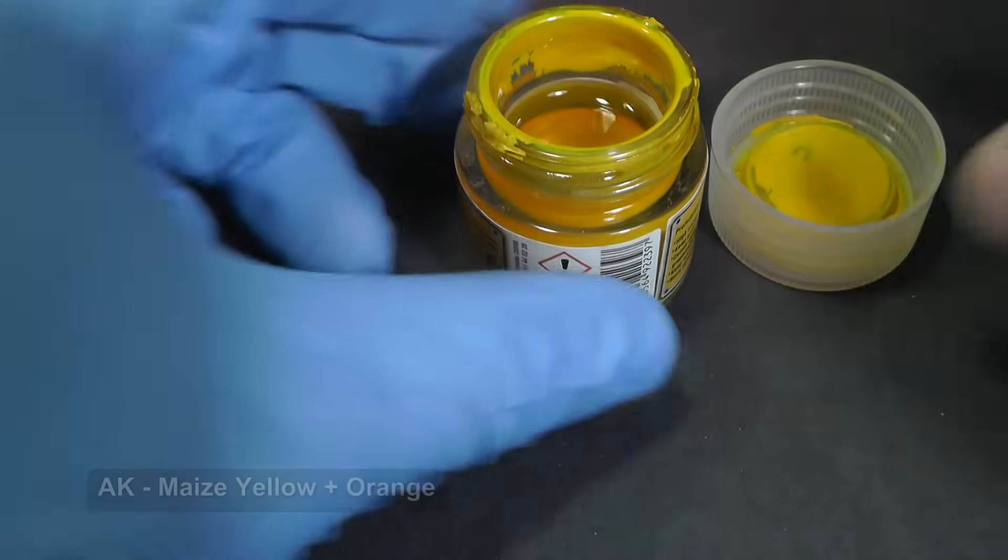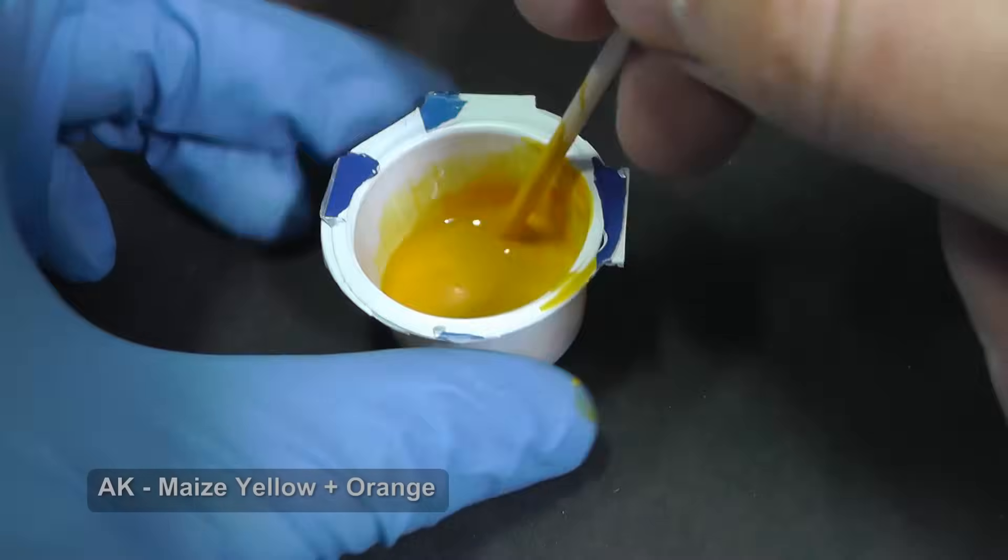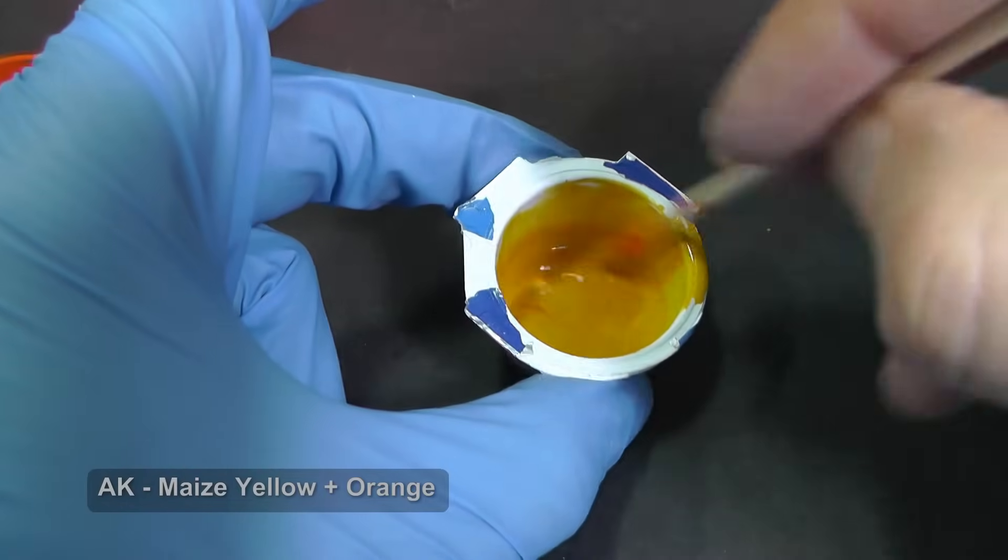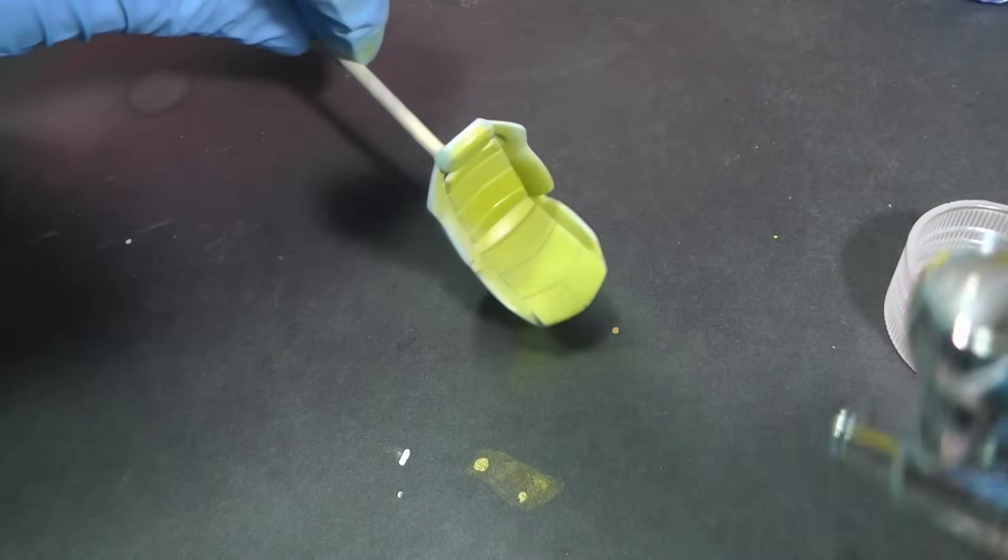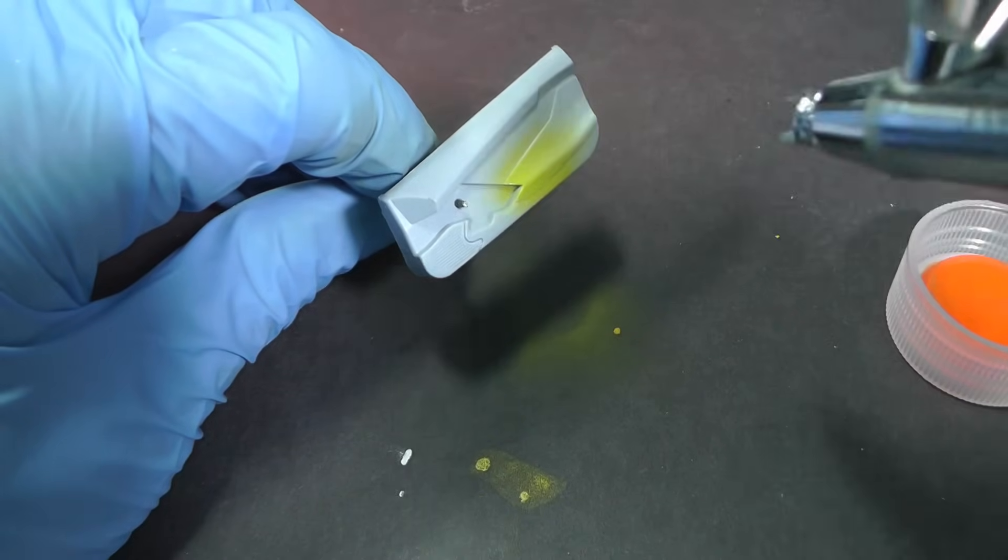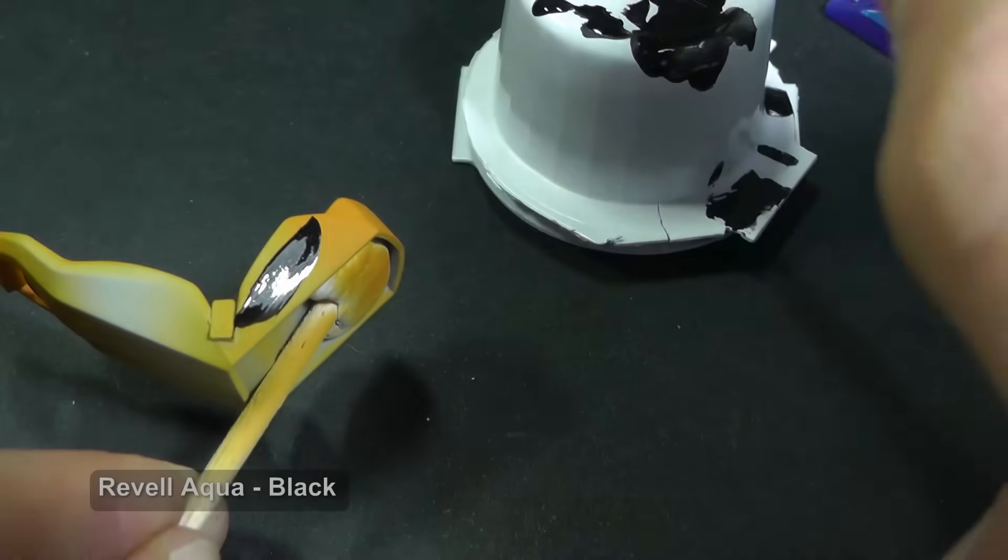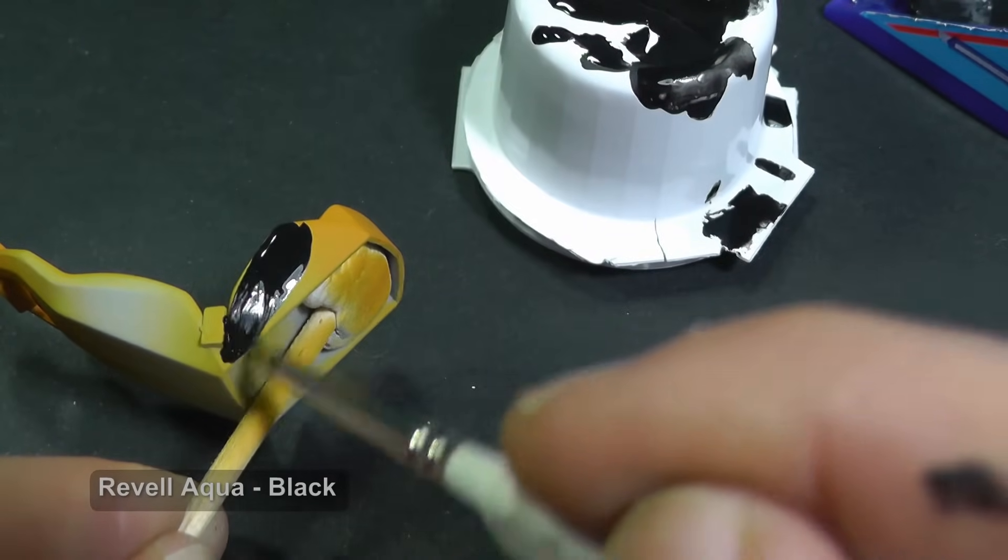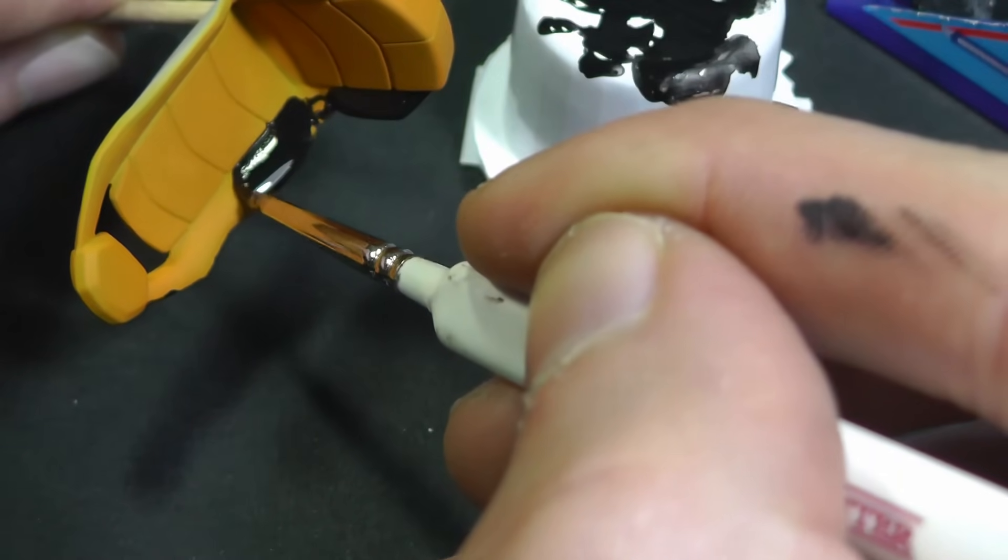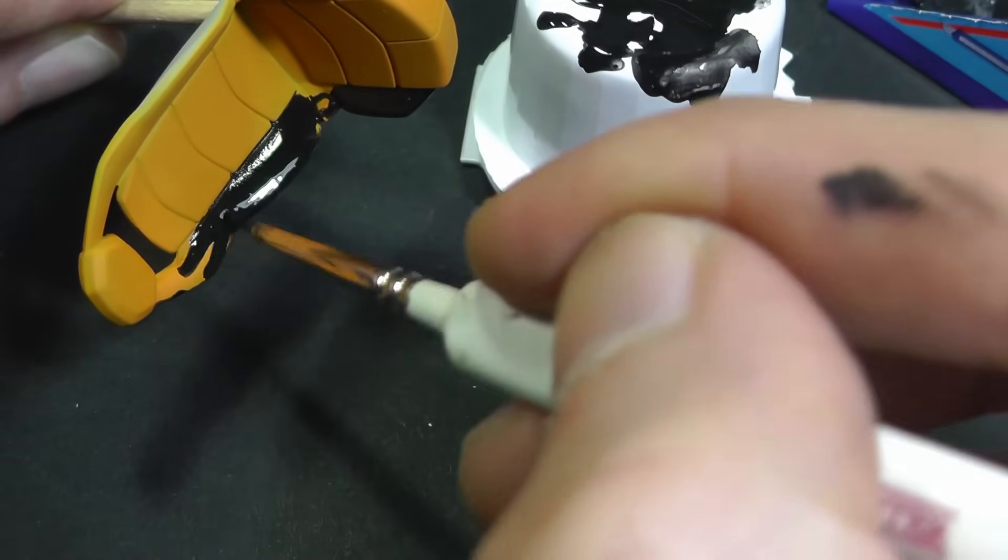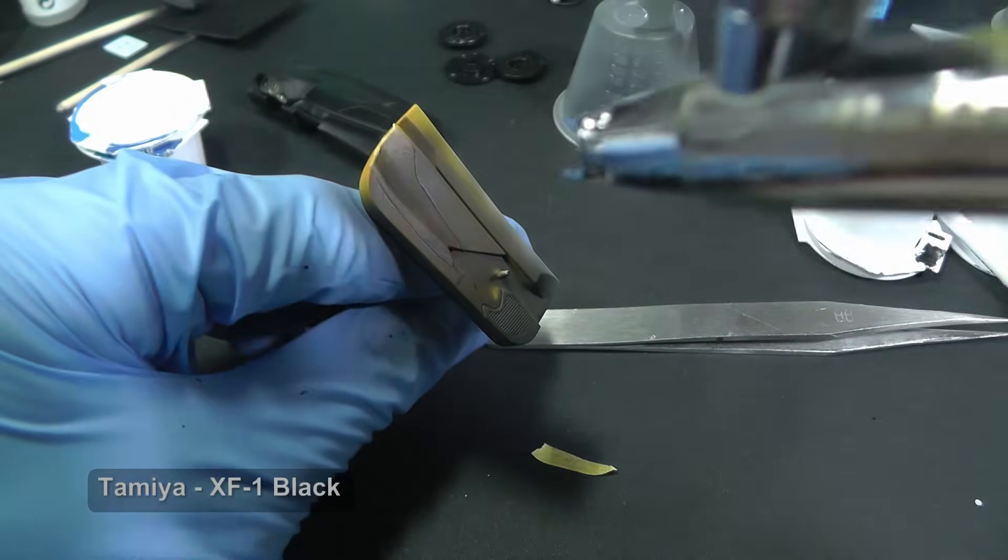Now I mix a similar orange shade with acrylic colors. The color has dense consistency, therefore I add a few drops of thinner. Now I paint black parts with a paint brush and acrylic color. Or you can mask orange parts with masking tape and spray black color with an airbrush.